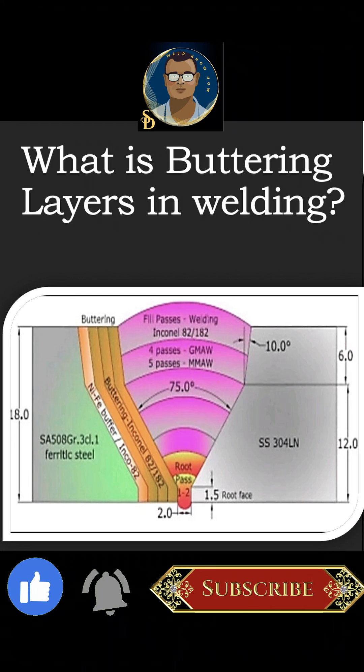For instance, welding austenitic stainless steel to a low alloy steel is not recommended because the higher carbon in the steel will allow chromium carbides to form in the stainless steel. When chromium carbides form, they deplete the chromium and reduce corrosion resistance.